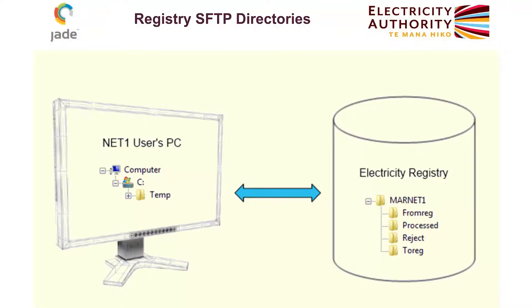That diagram is showing on the left-hand side your PC, and on the right-hand side the registry. For each participant, like NET1, there will be a set of directories set up at the registry end. So there's a MARNET1 super directory — the MAR bit comes from MARIA, which is for historical reasons. So MARNET1 is the directory for participant NET1.